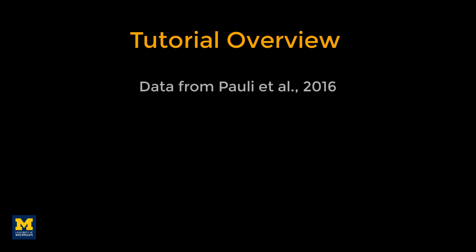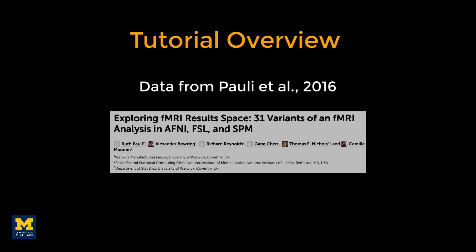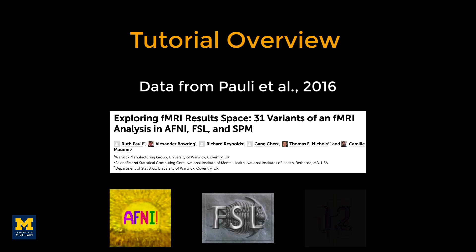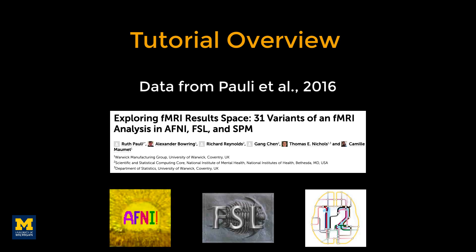For this tutorial, we will be using the data from the Pauli et al. 2016 paper, and the link can be found in the more info box below. We will learn how to analyze this dataset in the three major fMRI analysis packages: AFNI, FSL, and SPM. The following tutorials assume that you're already familiar with the basics of these packages, which will not be reviewed here. You can access the walkthroughs in the links below.